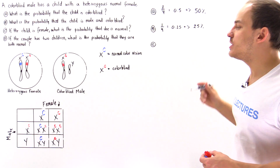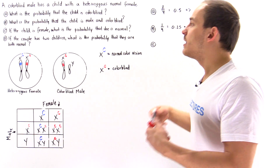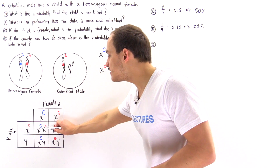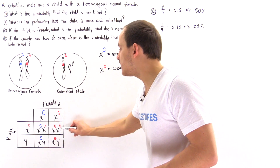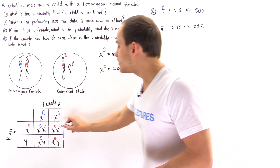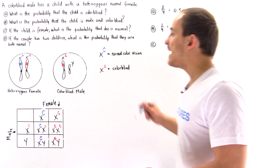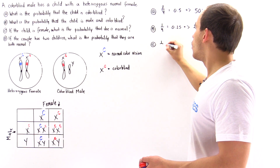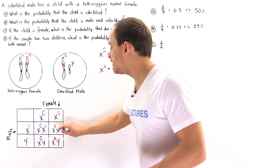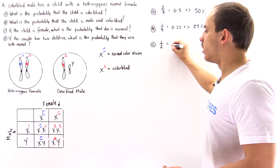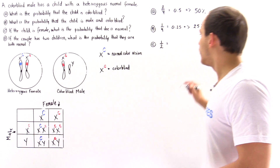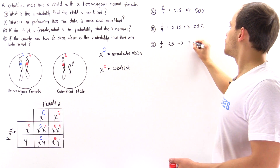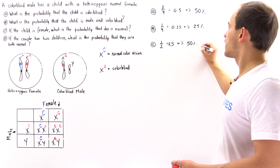Given that the child is female — these two boxes — what is the probability that she is normal, meaning not colorblind? One of the two female cases is normal, and the other is colorblind. So one out of two cases produces a normal female individual, which equals 0.5, or 50%.